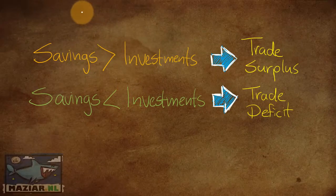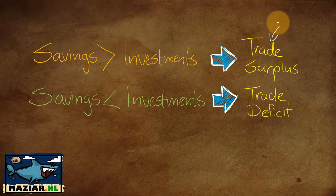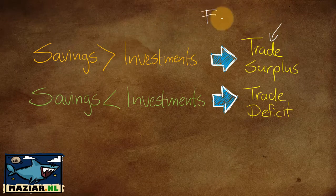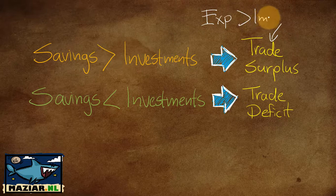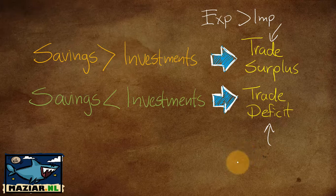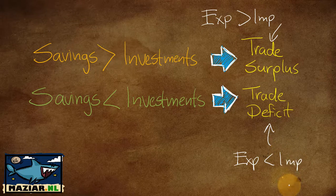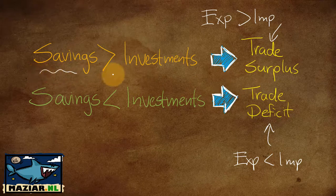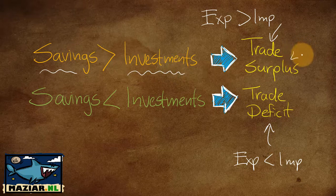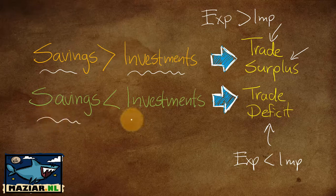We define a trade surplus when exports in an economy are more than the imports. A trade deficit is the opposite — when exports are less than imports. What we generally observe is that when domestic savings are more than domestic investments, that economy will typically end up with a trade surplus, and when savings are less than domestic investments, it will have a trade deficit.